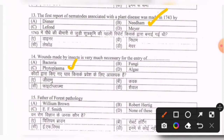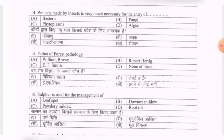Next question: father of forest pathology — options are William Brown, Robert Hartig, E.F. Smith, none of these. The correct option is Robert Hartig.